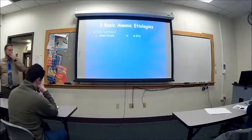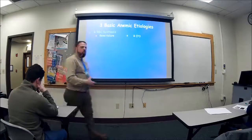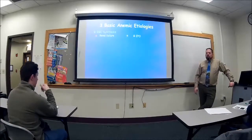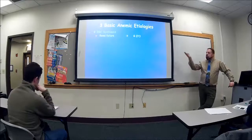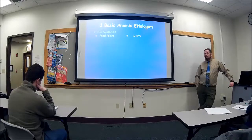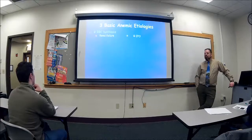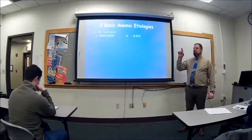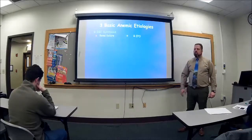If you have kidney disease you're not producing erythropoietin. Erythropoietin is a hormone — 10% of it is made in the liver and 90% is made in the kidney, so it's actually made in both places.